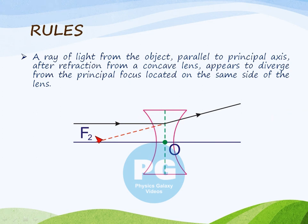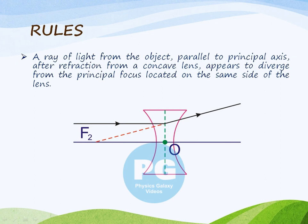In simple words, a ray of light that is parallel to the principal axis, after refraction from the lens, becomes diverging. So for the observer on the right-hand side, this ray of light appears to be coming from a point that is F2, which is the principal focus, located on the same side of the lens.